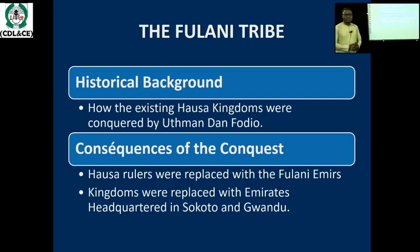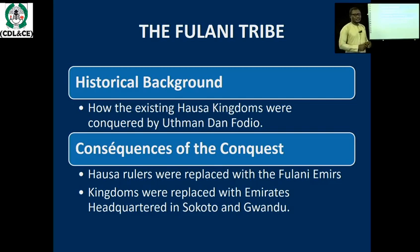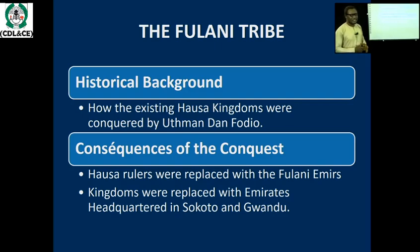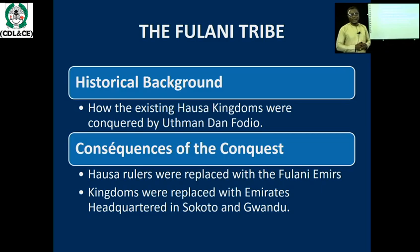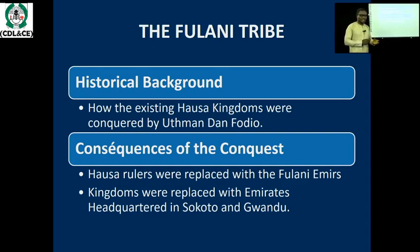A look at the historical background of the Fulani shows that there existed a Hausa kingdom before the Fulani emirates. But due to the holy war led by Othman dan Fodio, the Hausa kingdoms were conquered. After they were conquered, a lot of reorganization took place: all the Hausa rulers were replaced by Fulani emirs, the Hausa kingdoms were replaced with emirates, and two headquarters were created — one in Sokoto and one in Gwando.